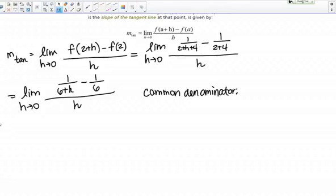The common denominator is often just the product of the two denominators. In this case, the common denominator is going to be 6 times 6 plus h. I want to rewrite those fractions in the numerator so that they both have that denominator.